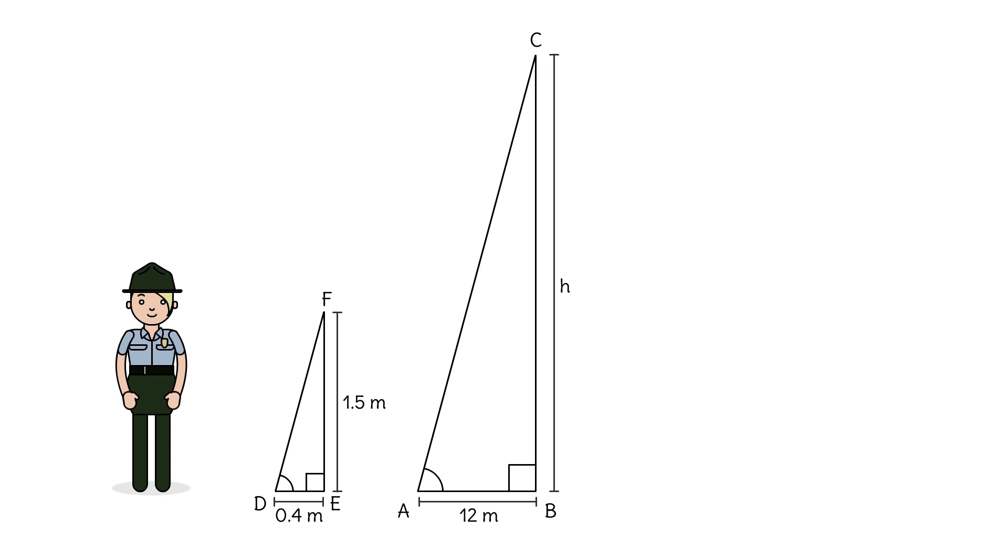When writing proportions, be sure and match corresponding sides correctly. Here we can write the ratio of tree shadow to stick shadow. That's 12 over 0.4. That equals the ratio of tree height to stick height, H over 1.5.